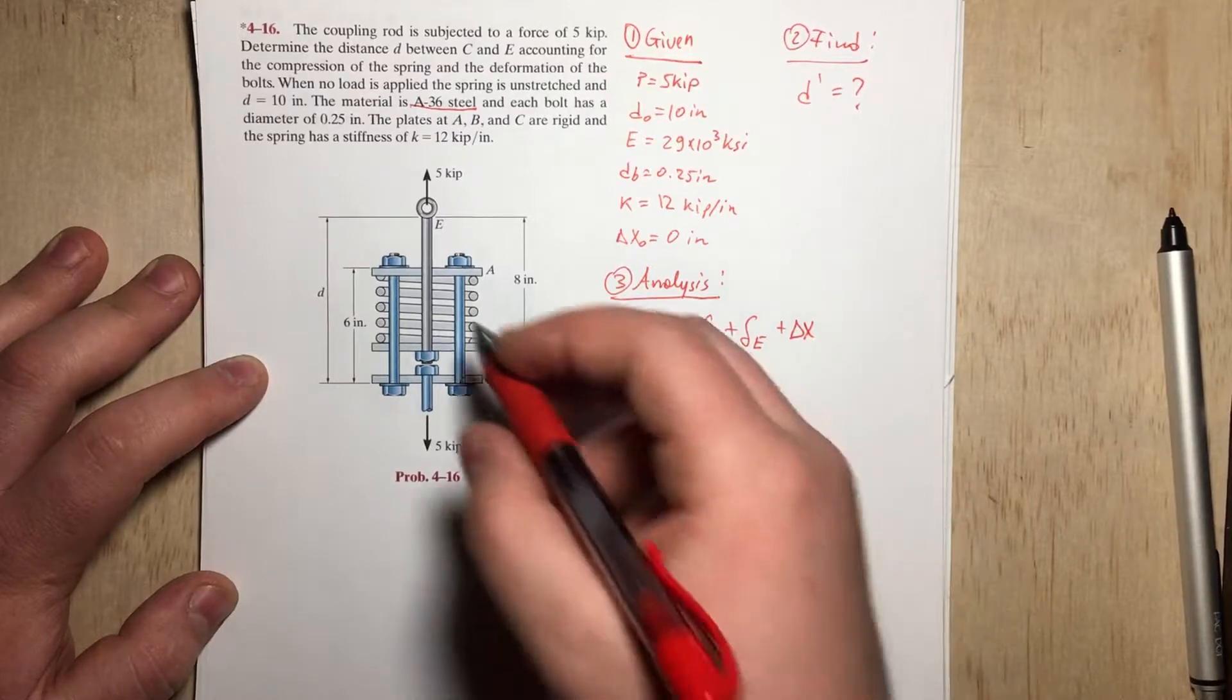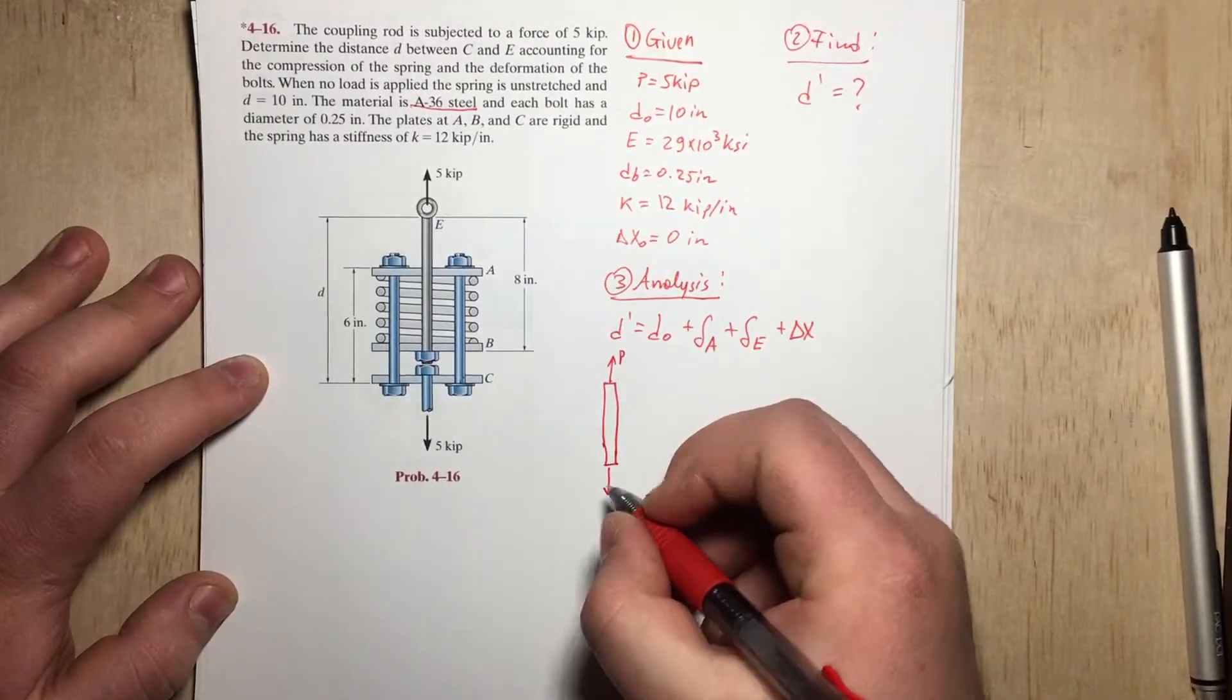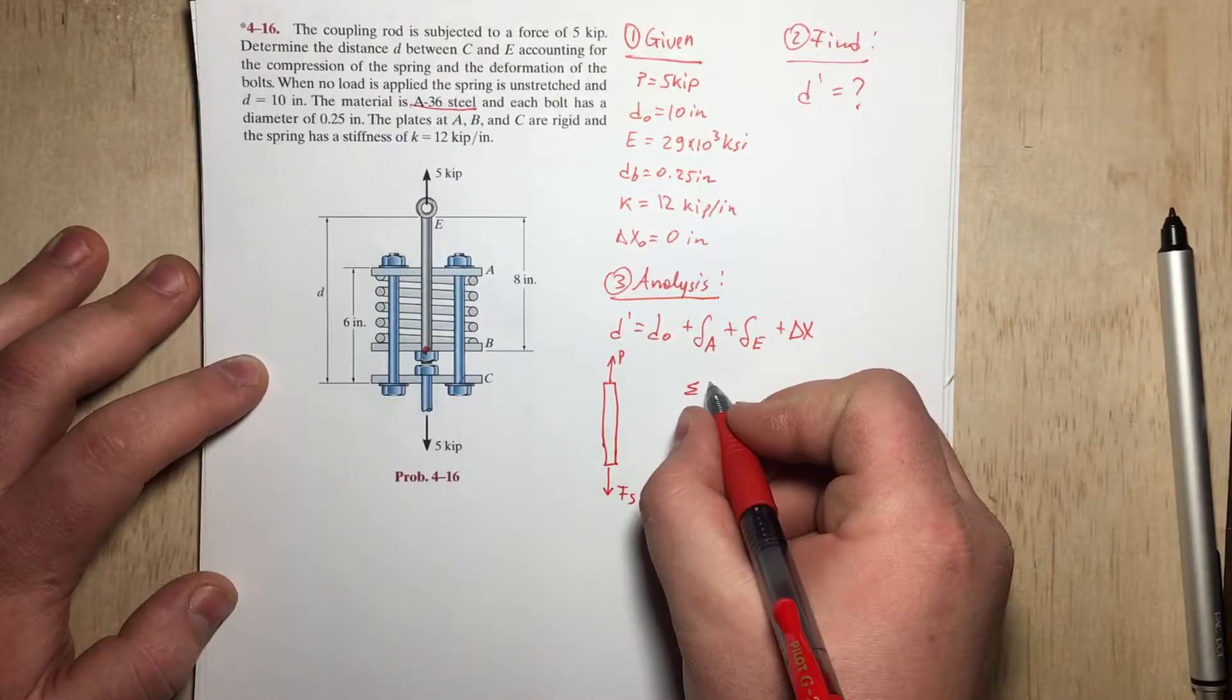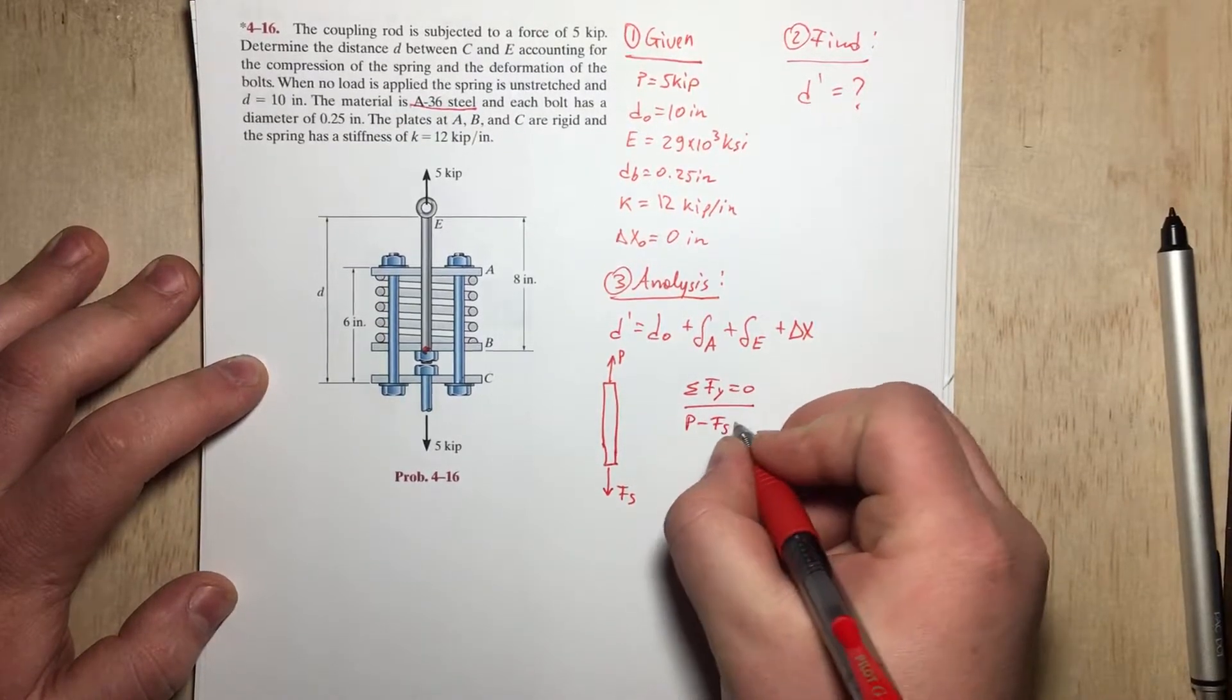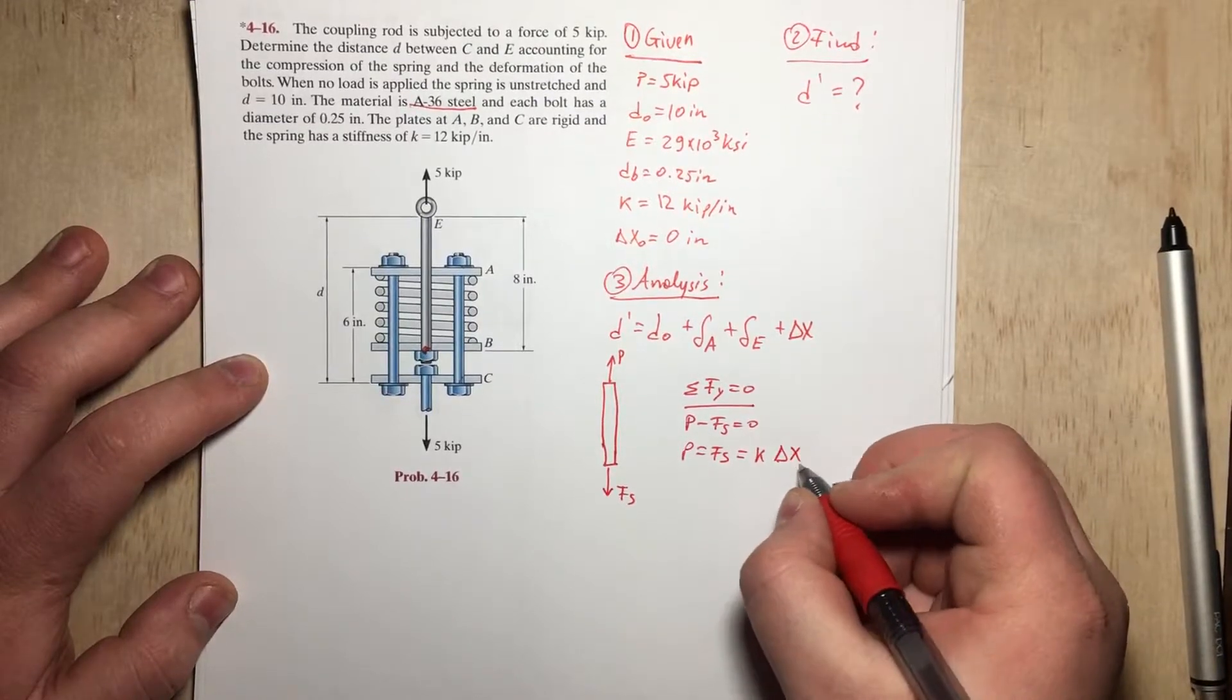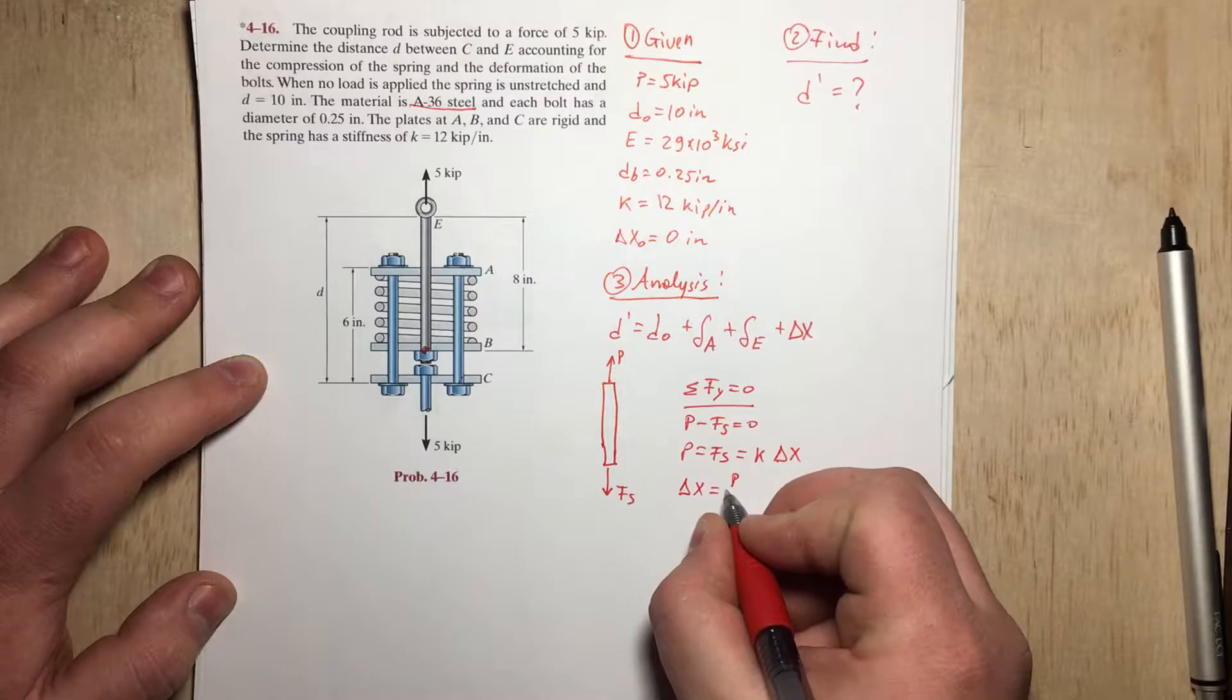So let's begin by drawing a free body diagram of the rod. We have the P right here, and we also have the spring that will be pushing down at this point right here. So we have force of the spring. If we sum forces in the y direction, they have to be equal to 0. Therefore, P minus Fs equals 0, P equals Fs. We also know that the force of the spring has to be equal to the stiffness times delta X, that is Hooke's law. So by solving for delta X, we simply need to divide by K. Therefore, delta X is going to be equal to P over K.